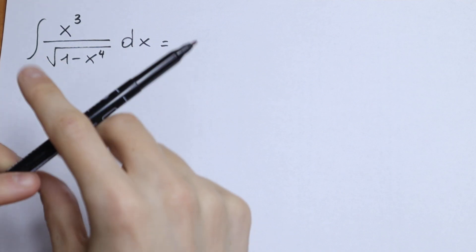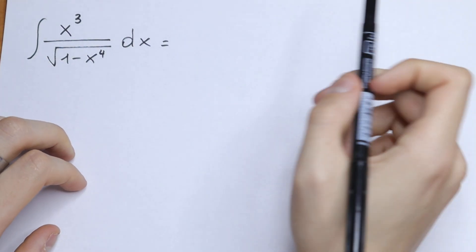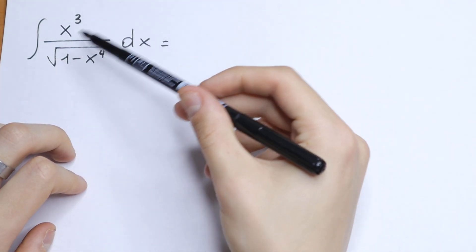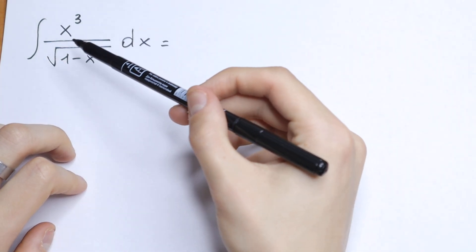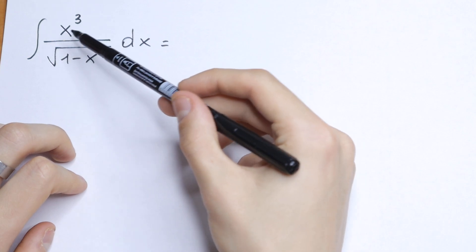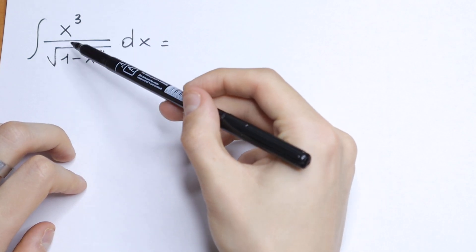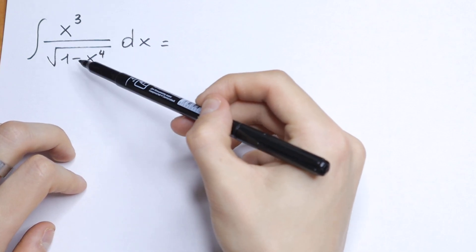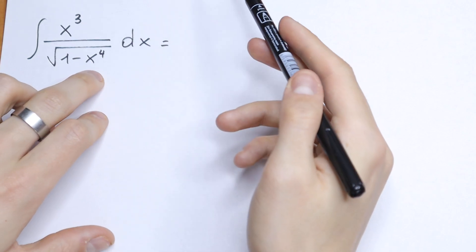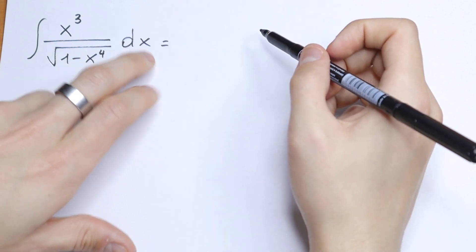Hello everyone, welcome back to higher mathematics. Today we have an interesting indefinite integral: what is the integral of x cubed over the square root of 1 minus x to the fourth power, dx?